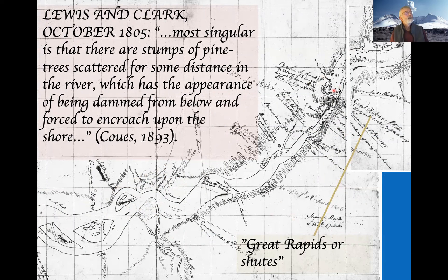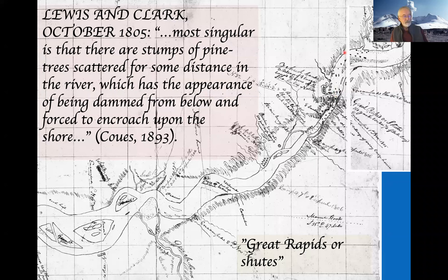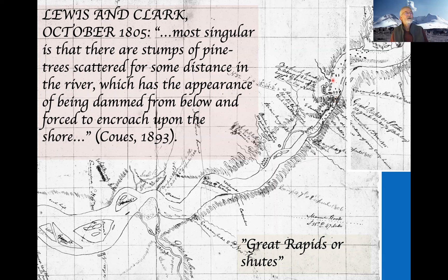Another Lewis and Clark connection: in late October 1805 they camped at the Great Chute coming down the Columbia and described a giant landslide—they noticed dead trees and remarked that the stumps 'had the appearance of showing the river had been dammed up from below and forced the water to encroach upon the trees and kill them.' They were absolutely correct, and this observation was later cited in Lyell's first geology textbook as evidence of an event that dammed the entire Columbia River.